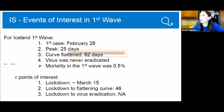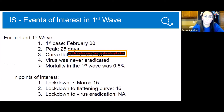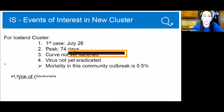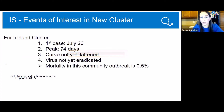For the first wave in Iceland, the peak was 25 days and the curve was flattened within 62 days, but the virus was never eradicated. For the second cluster, the peak was 74 days, they still haven't flattened the curve after about 120 days — they still haven't gone below 10 per million per day — and the virus has not been eradicated.